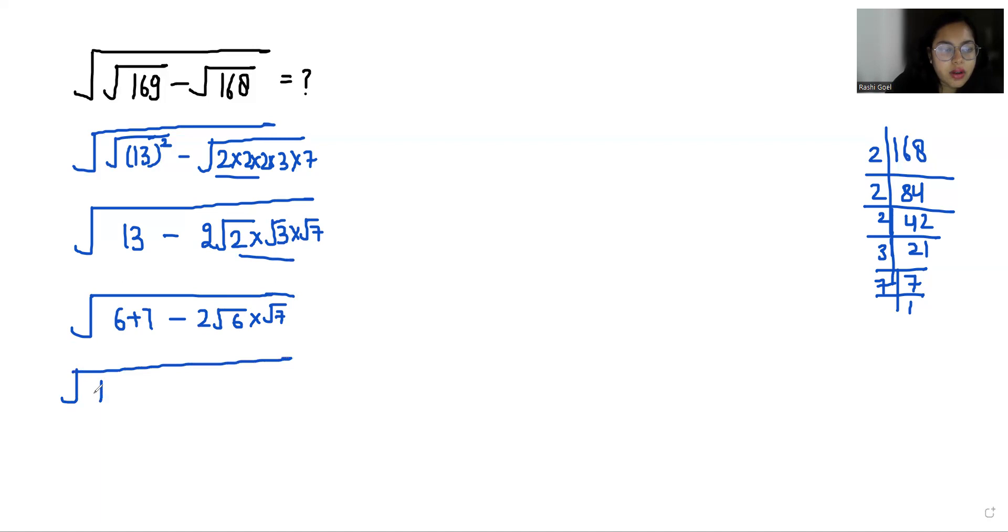Now 6 we can write it as square root 6 square plus square root of 7 square minus 2 times square root of 6 times square root of 7. Now it becomes a very famous identity that is a square plus b square minus 2ab.